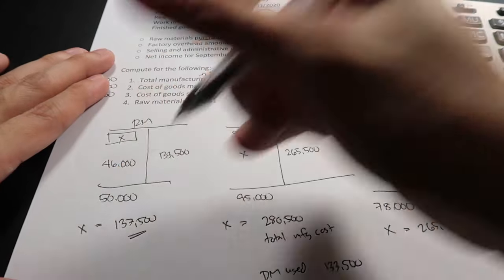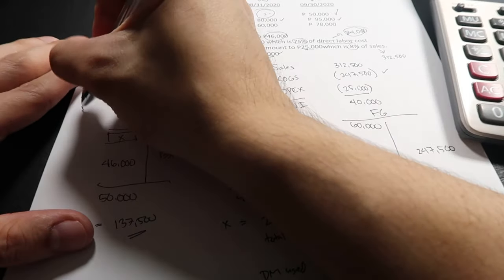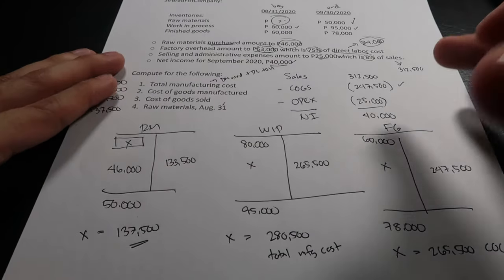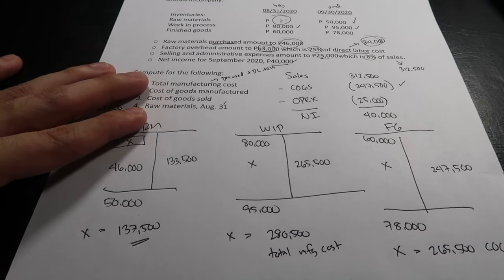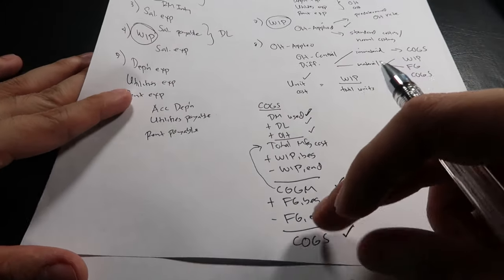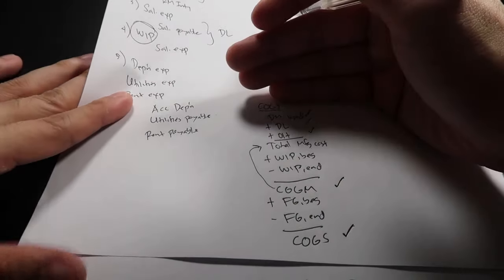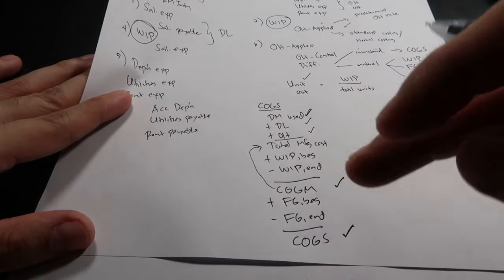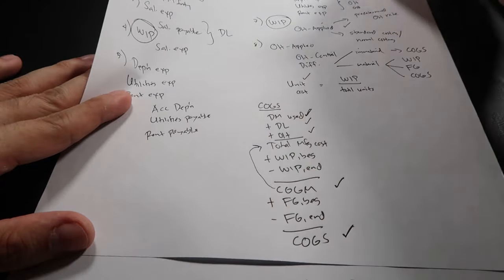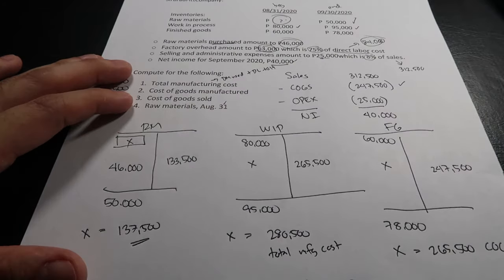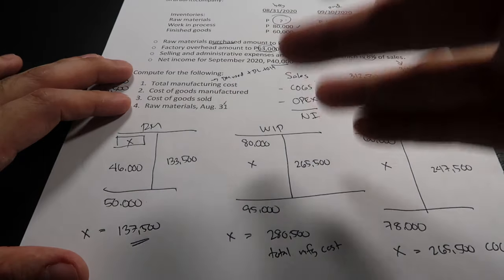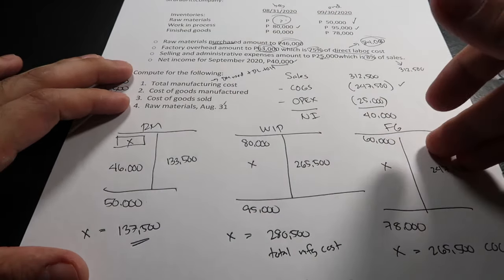So beginning raw materials is 137,500 — the answer for question four. As you can see, it's easy because I know this formula. Even though the problem went from cost of goods sold back to raw materials, it's fine because I have the formula memorized. Using T-accounts really helps to be efficient in answering these questions.